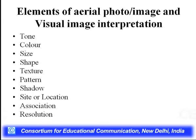The different elements of aerial photo image interpretation include tone, colour, size, shape, texture, pattern, shadow of any object, and site or location. These are known as keys for image interpretation. We use these for identifying different objects — for example, a tree can be identified on the basis of shape or colour. Sometimes we combine two or three elements to find better results.